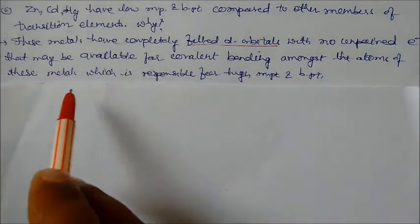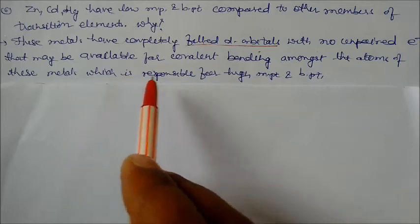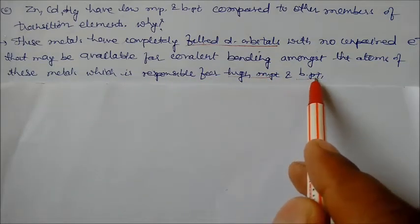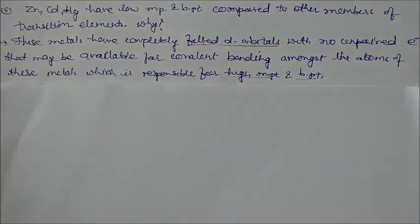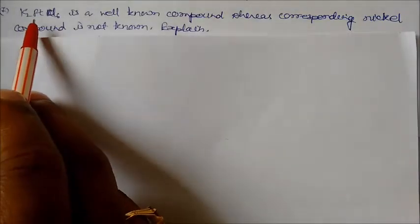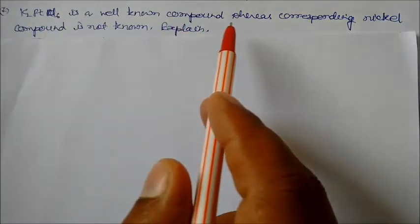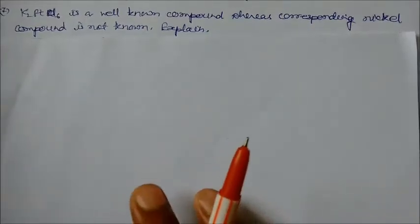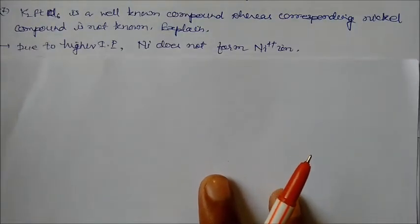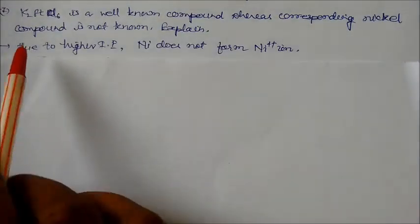These metals which is responsible for high melting point and boiling point. K2PtCl6 is a well known compound whereas corresponding nickel compound is not known. Why?